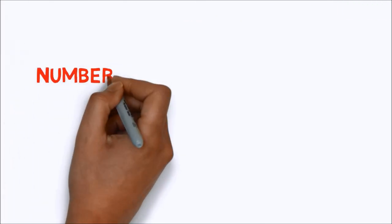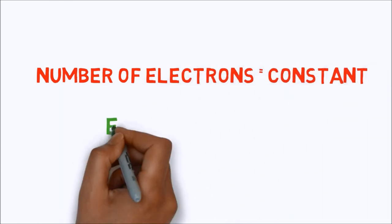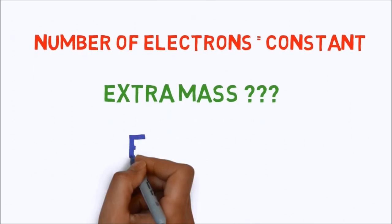Now, overall counting of electrons doesn't change in the system. So, where does this extra mass come from? The answer is due to the energy.